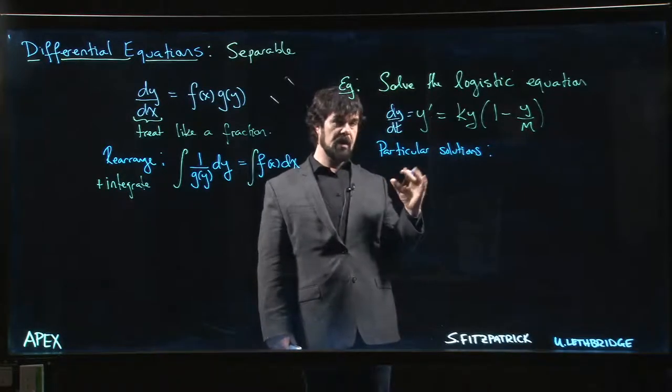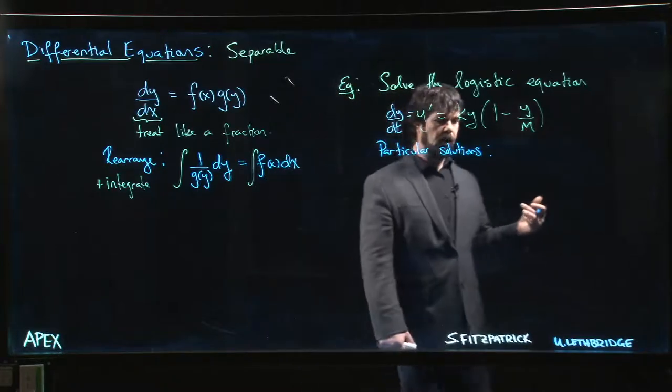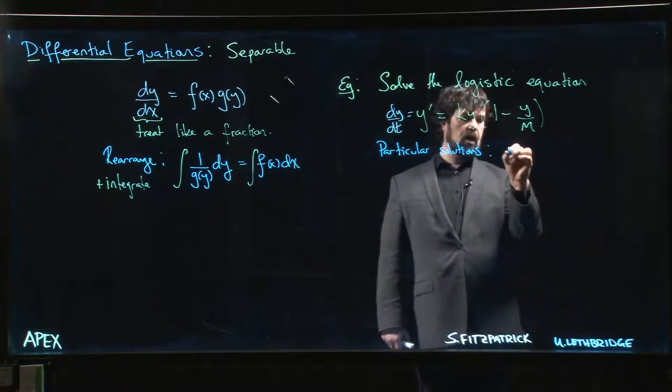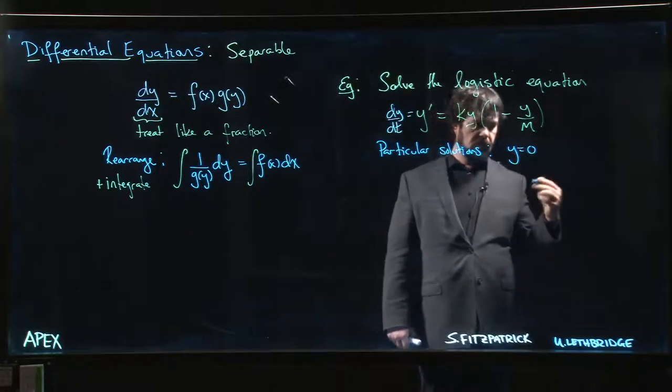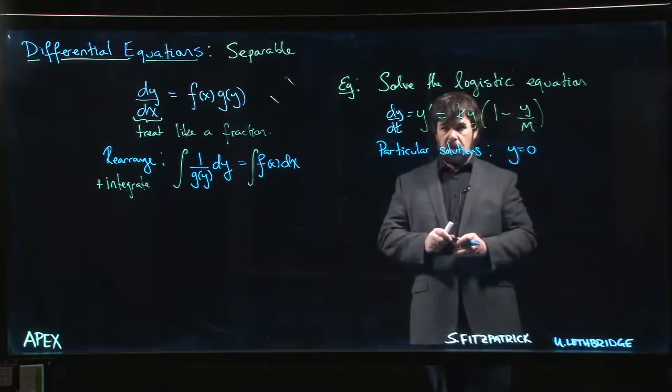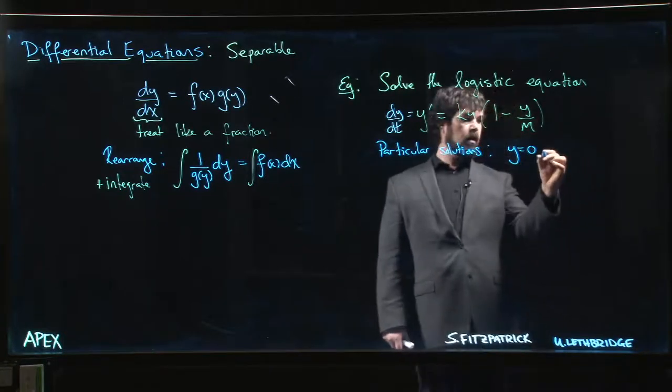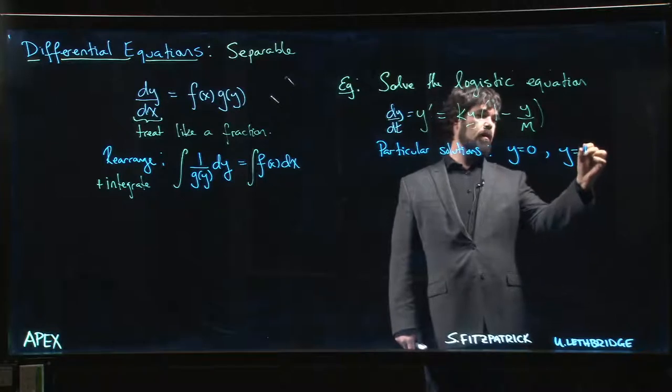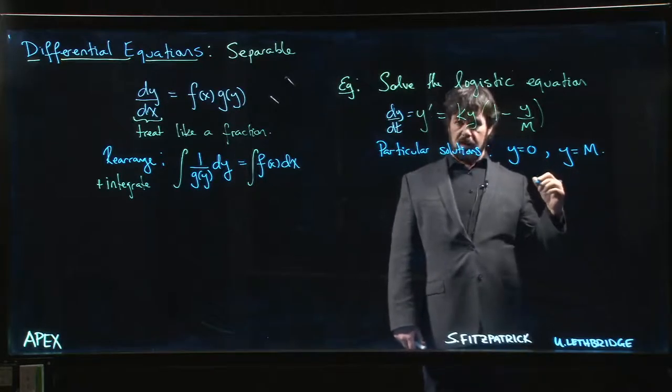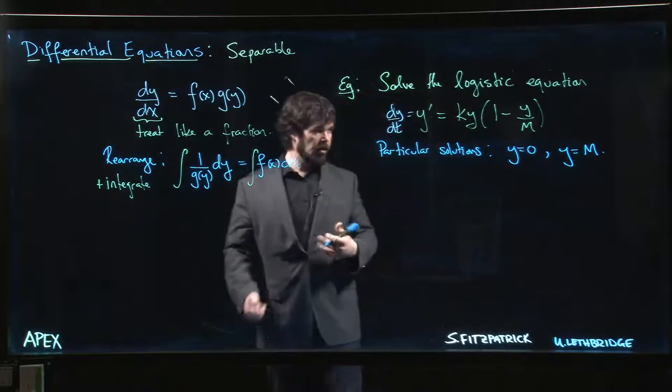Okay, so there's actually two particular solutions and you want to be mindful of these because they're not always captured in the general equation, the general solution that you write down when you solve. What are the particular solutions? Well, one is y is equal to zero. If your population is extinct, it's not going to grow. There's nothing there, there's no way to reproduce if you have none. The other one is if y hits the maximum.